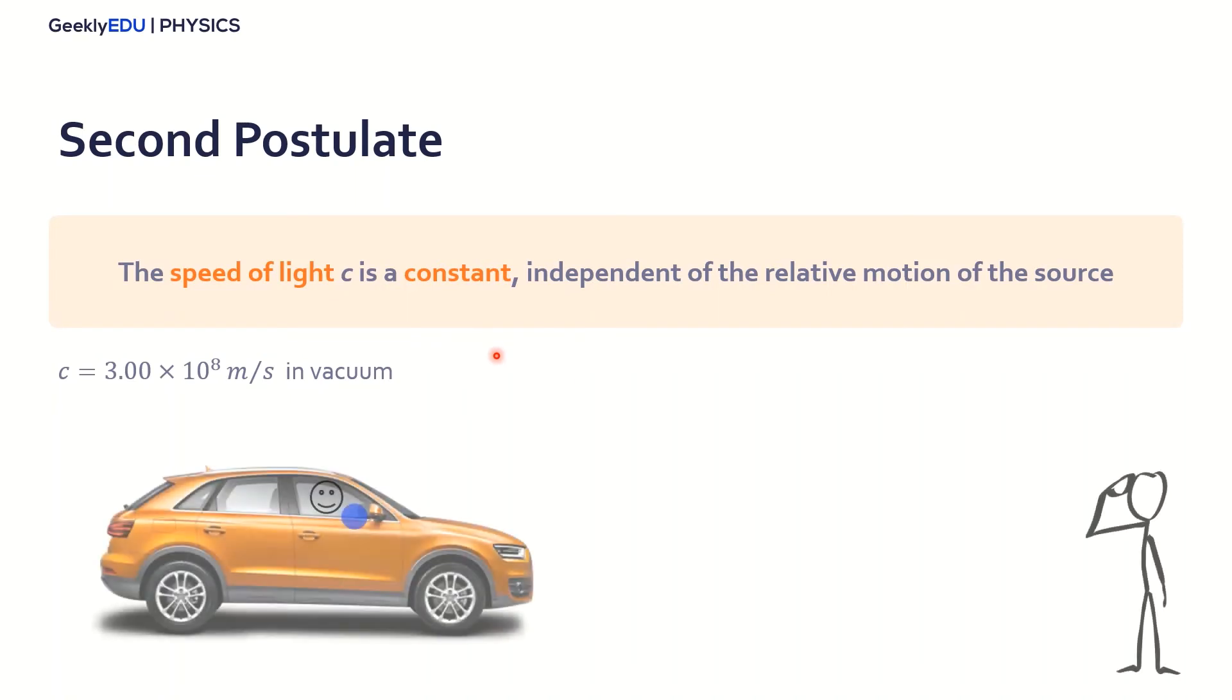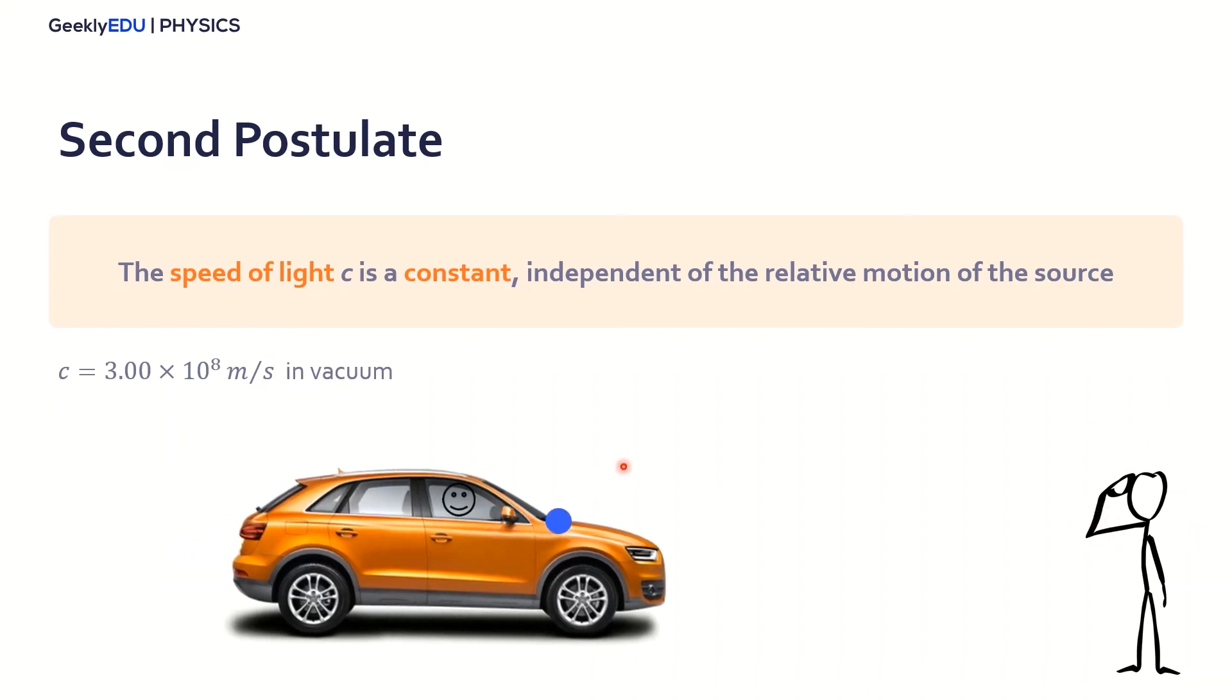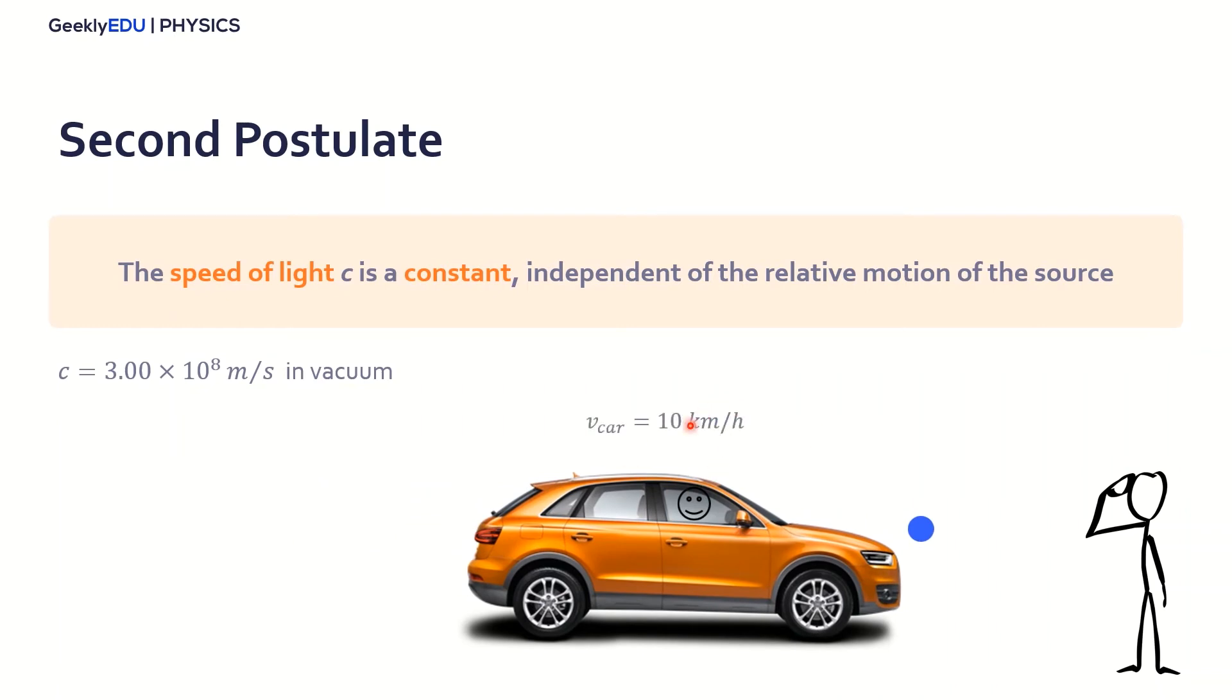In classic physics, if we have a car here, and the person inside the car throws the ball in the direction of this other person here. So we have the speed of the car, 10 km per hour for example, and he throws the ball forward at a certain speed, 3 km per hour for example. So for this observer here, the speed of the ball will actually be 13 km per hour. It will be the speed of the car plus the speed of the ball. Now, we are adding the speeds here.